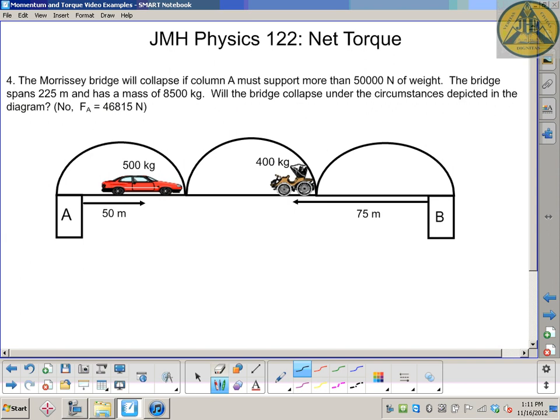We want to focus on column A, so this will be a little bit different. We're going to place our pivot point for this problem at column B, because we want to solve for column A. Whatever column you're trying to solve for, put the pivot point at the other end.